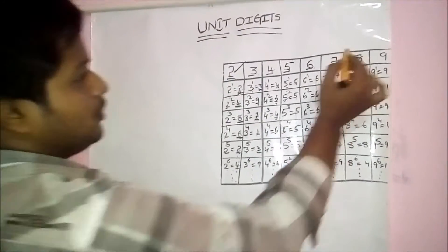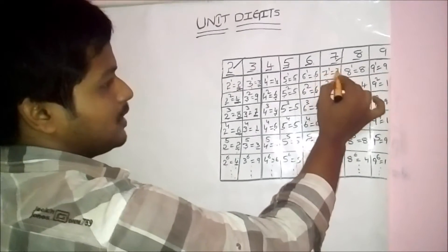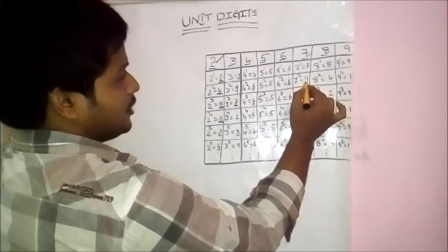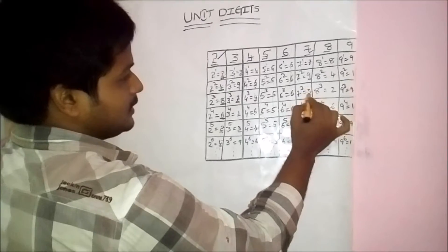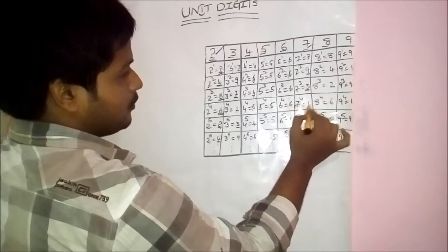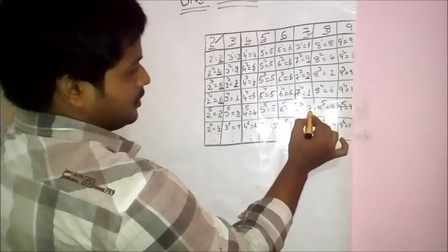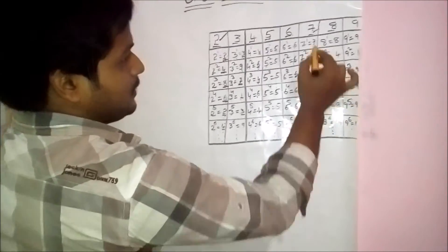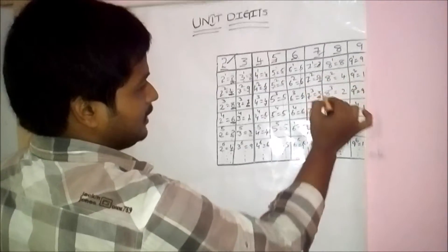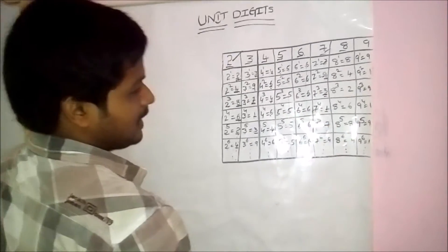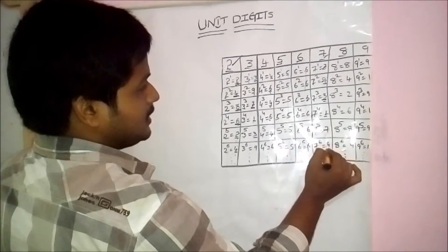Look at the unit digit of 7. 7 power 1 is 7, 7 squared is 49 — unit digit is 9, 7 cubed unit digit is 3, 7 power 4 unit digit is 1, 7 power 5 unit digit is 7 again. That means 7 is repeated. The cycle is 7, 9, 3, 1 and so on. The unit digit of 7 is repeated.